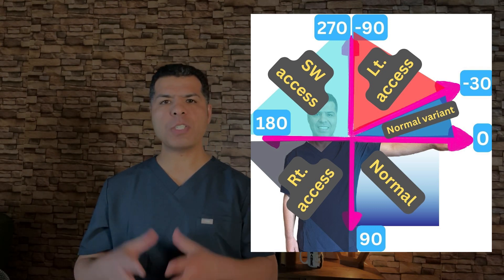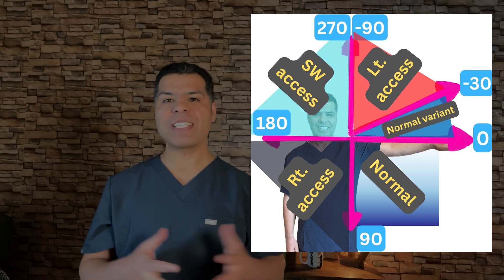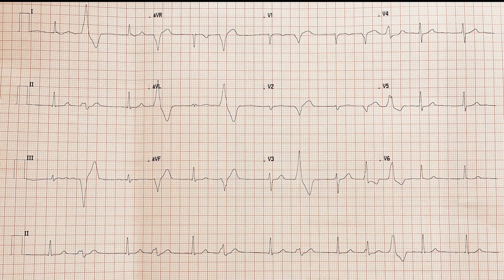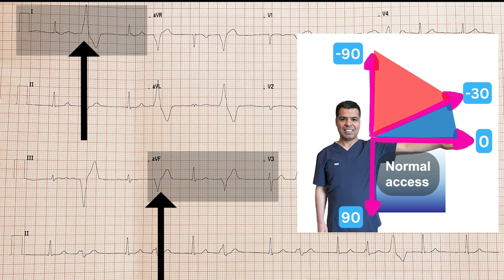Let's practice with some EKGs. Looking at this EKG, lead 1 QRS deflection is positive, moving in the direction of our stretched left arm at 0 degrees, and lead AVF QRS net deflection is also positive, moving in the direction of our left leg at plus 90 degrees. So the axis is between 0 and plus 90 degrees — this is a normal axis. The wide beats are PVCs, premature ventricular contractions, which we do not need to pay attention to for axis determination.